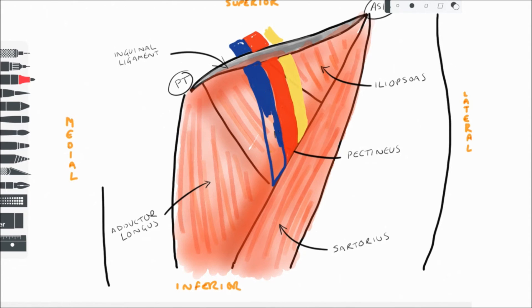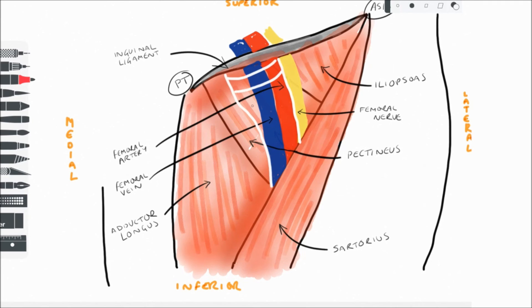So the main contents that we have are a large nerve, artery, and vein. Unsurprisingly, in the femoral triangle these are the femoral nerve, femoral artery, and femoral vein, in that order passing from lateral to medial. These structures pass deep to the inguinal ligament in the retro-inguinal space and pass through the femoral triangle.